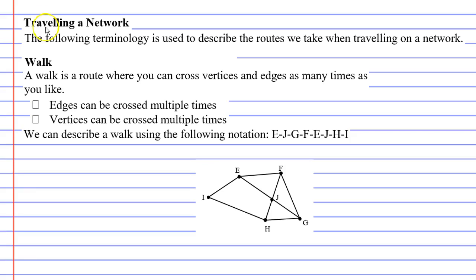First I'm going to talk about is called a walk. A walk is basically a route where you can cross vertices and edges as many times as you like. We're going to go for a walk on our network diagram and the walk that we're going to go on is described below.